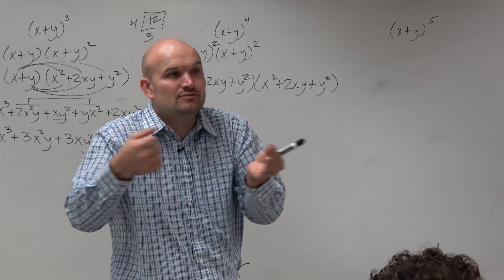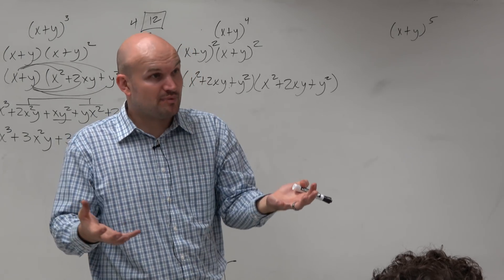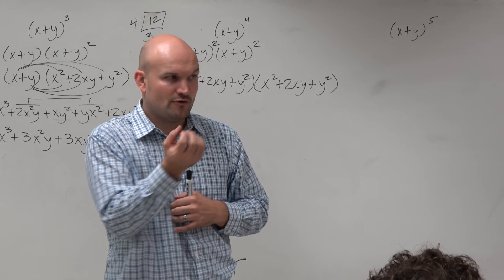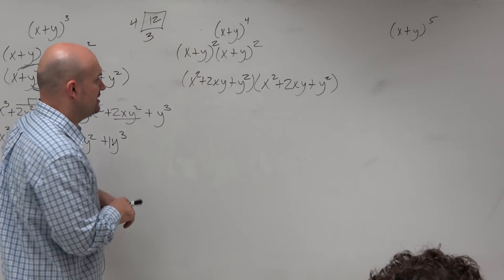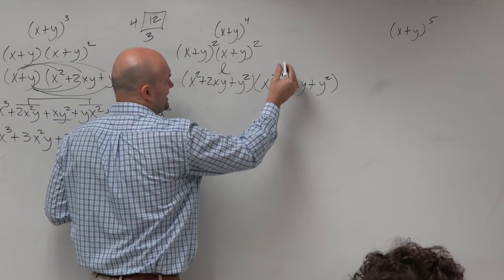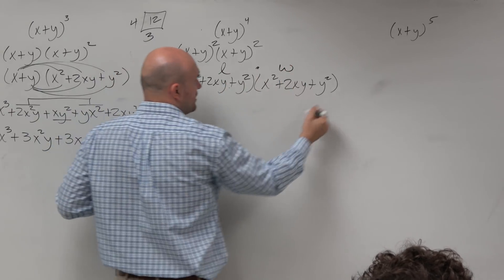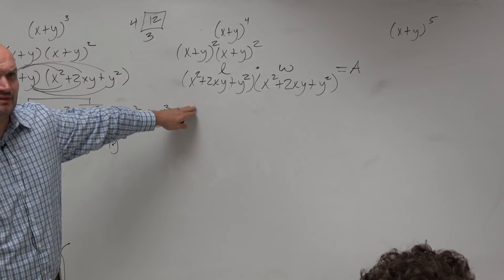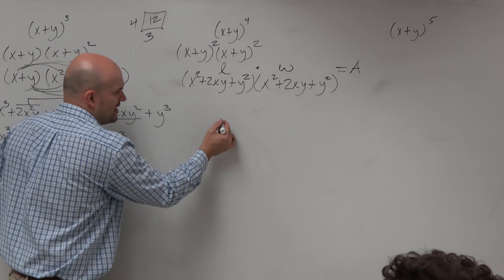So really, the product of any two numbers, variables, expressions, can be represented as length times width of a box. And therefore, their product represents the area. So what that means is, I could treat these as a length and a width, and their product is going to equal the area. Now, do I have any idea what this box looks like? No, but let's create one.